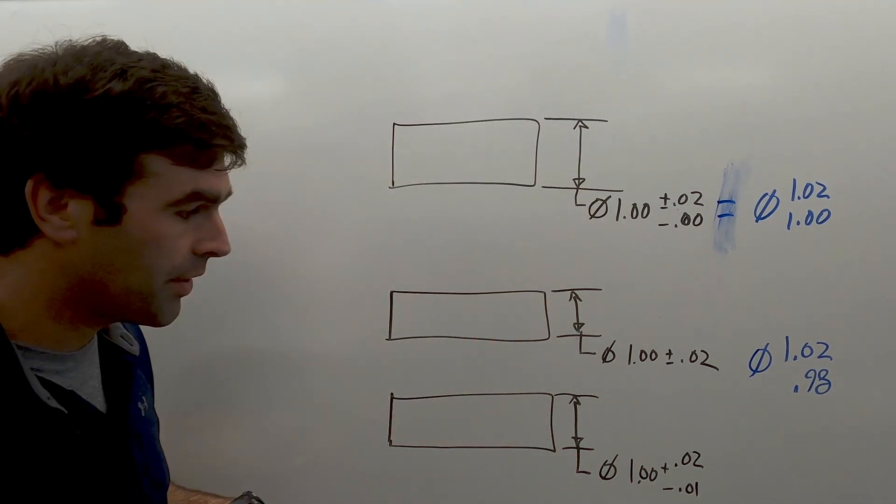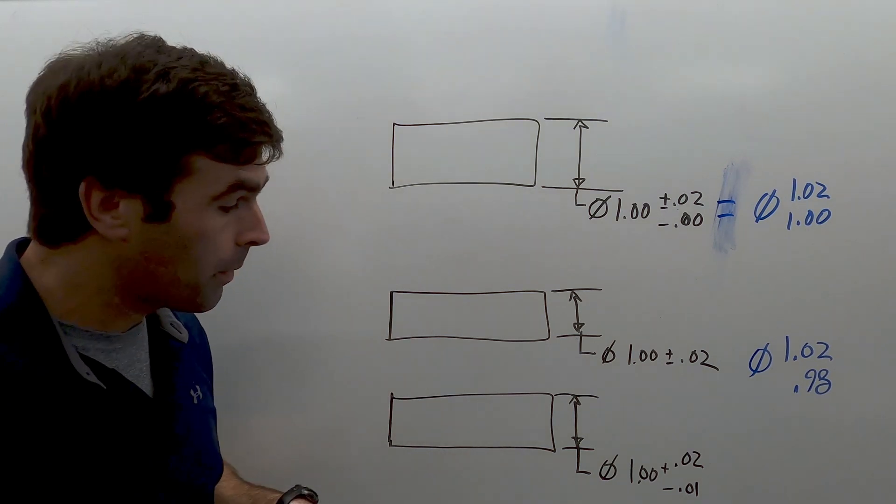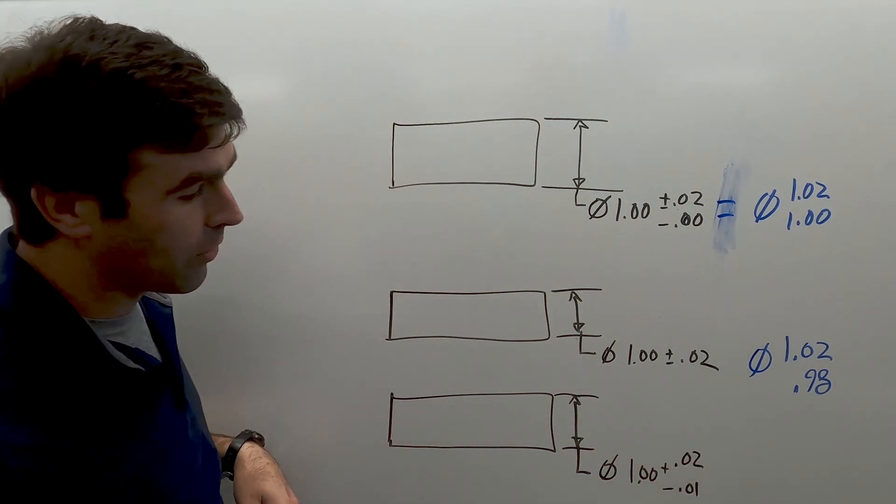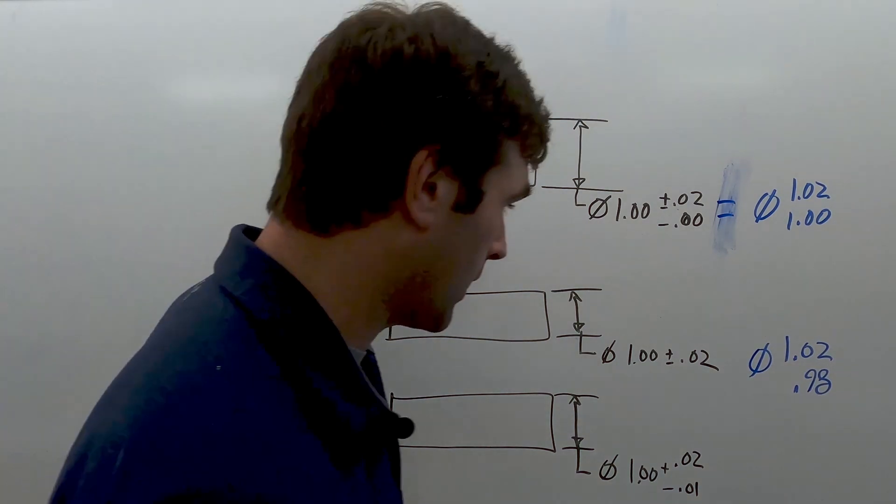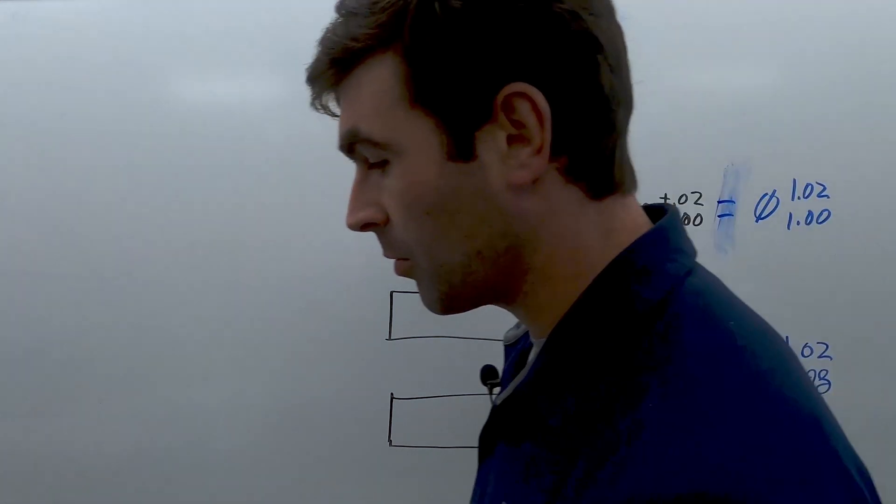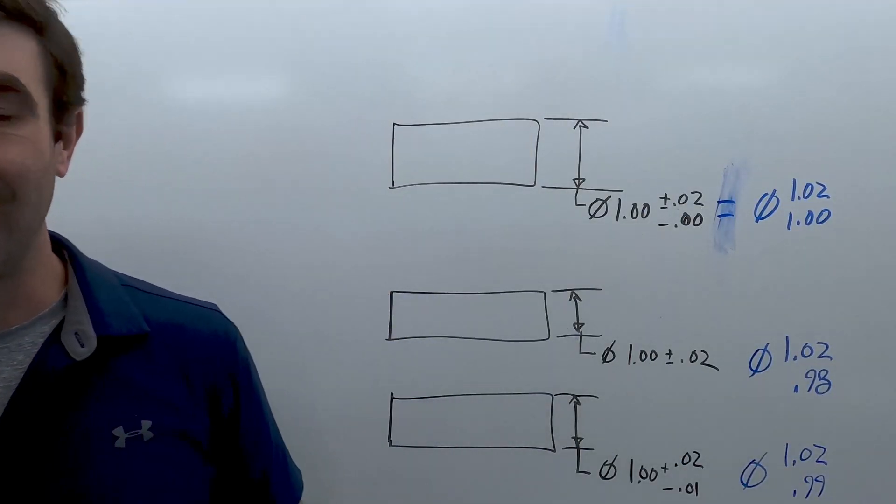And our next one, our bilateral unequal. So we've got 1.0 plus 20 thou minus 30 thou. This one written with limit dimensions would look like this. 1.02, 0.99. Right?